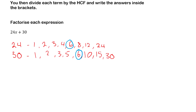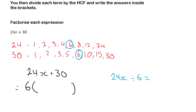So 6 is our highest common factor. When factorizing 24x plus 30, we write 6 outside the brackets. We then divide each term by 6: 24x divided by 6 gives 4x, and 30 divided by 6 gives 5. So our factorized expression is 6(4x + 5). We went from 24x plus 30 to 6 bracket 4x plus 5.